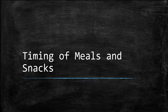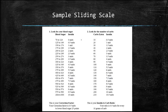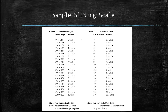Timing of Meals and Snacks. A sliding scale is what you will use to determine how much insulin you need to give to correct an elevated blood sugar and or for food. There are two parts: correction factor and insulin to carb ratio.